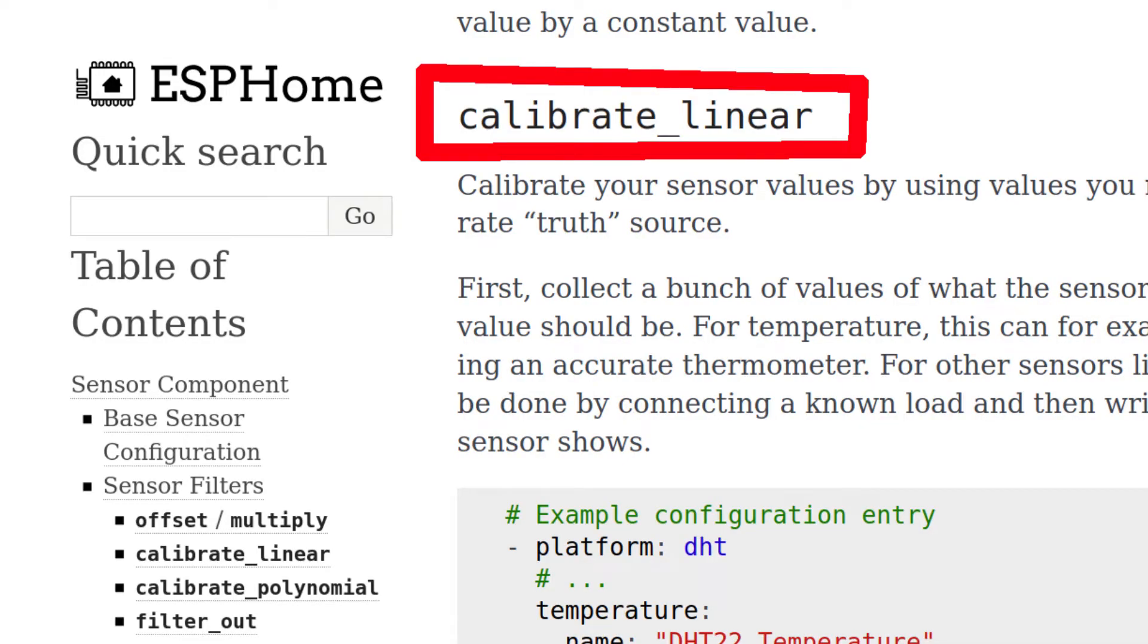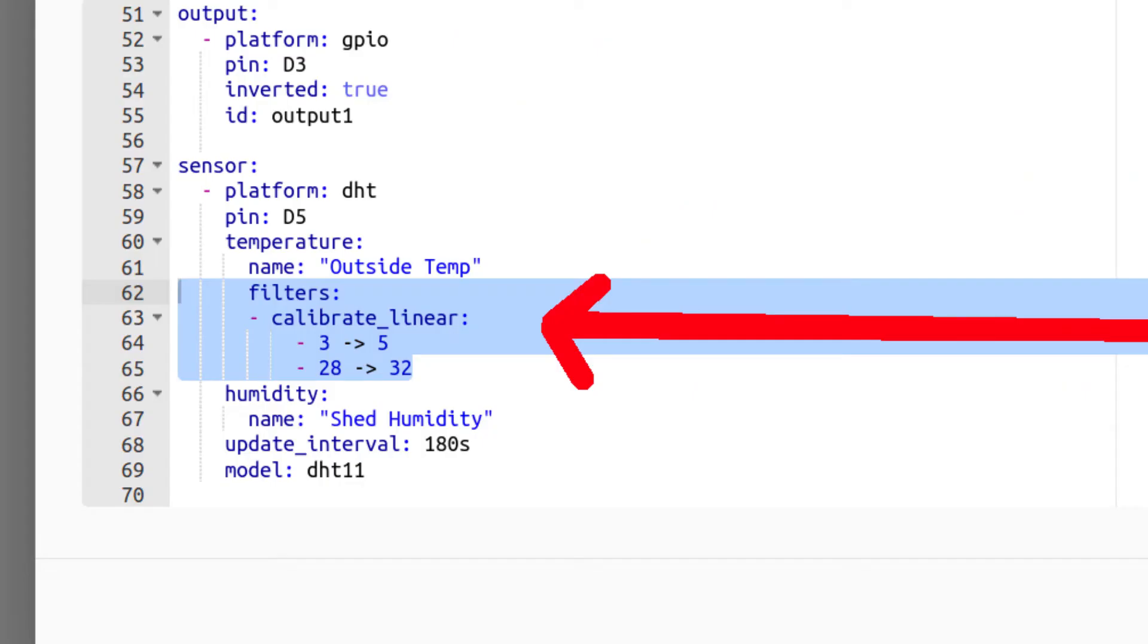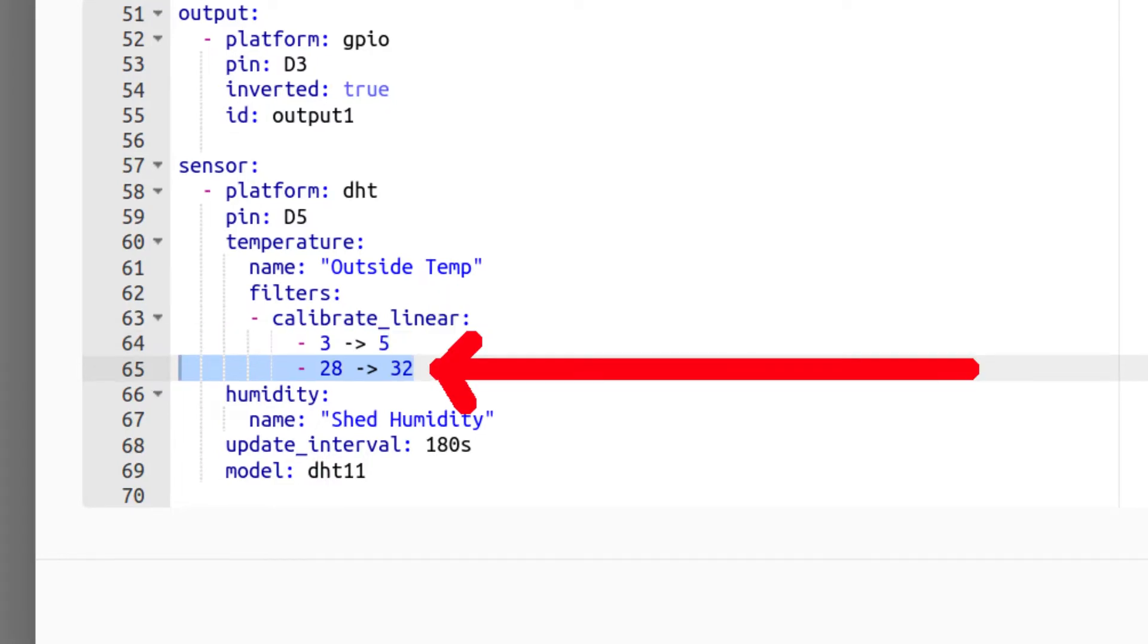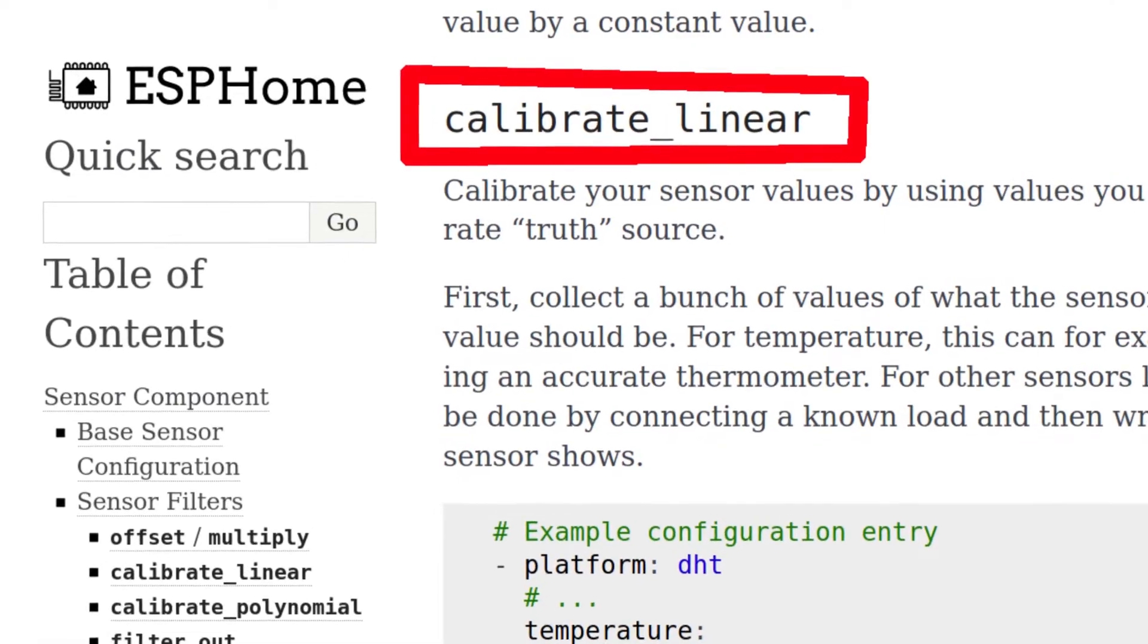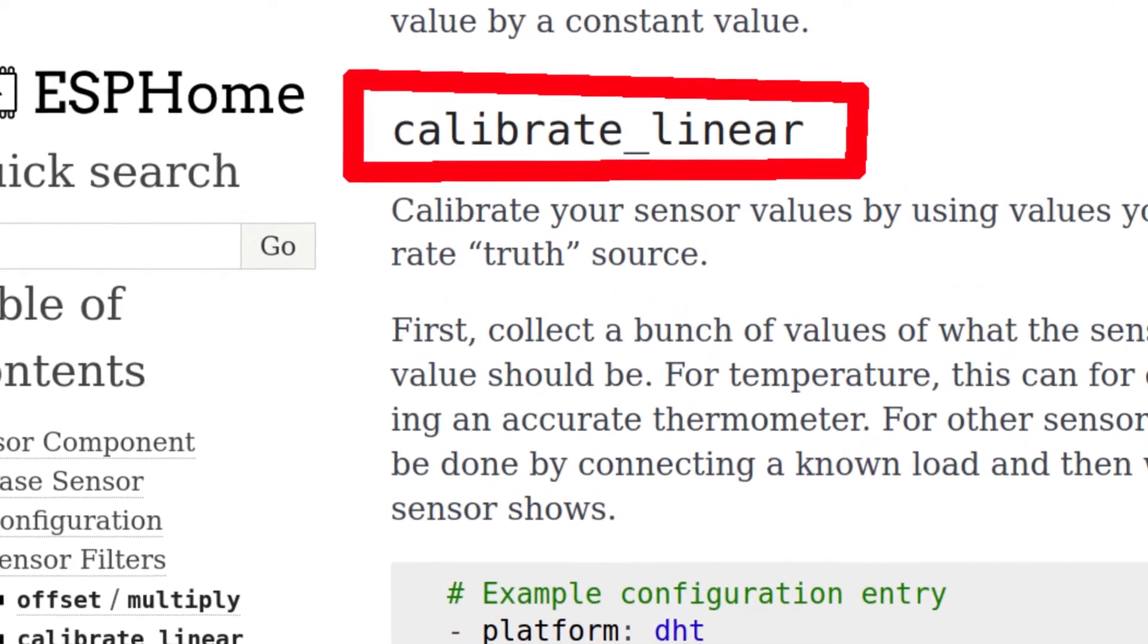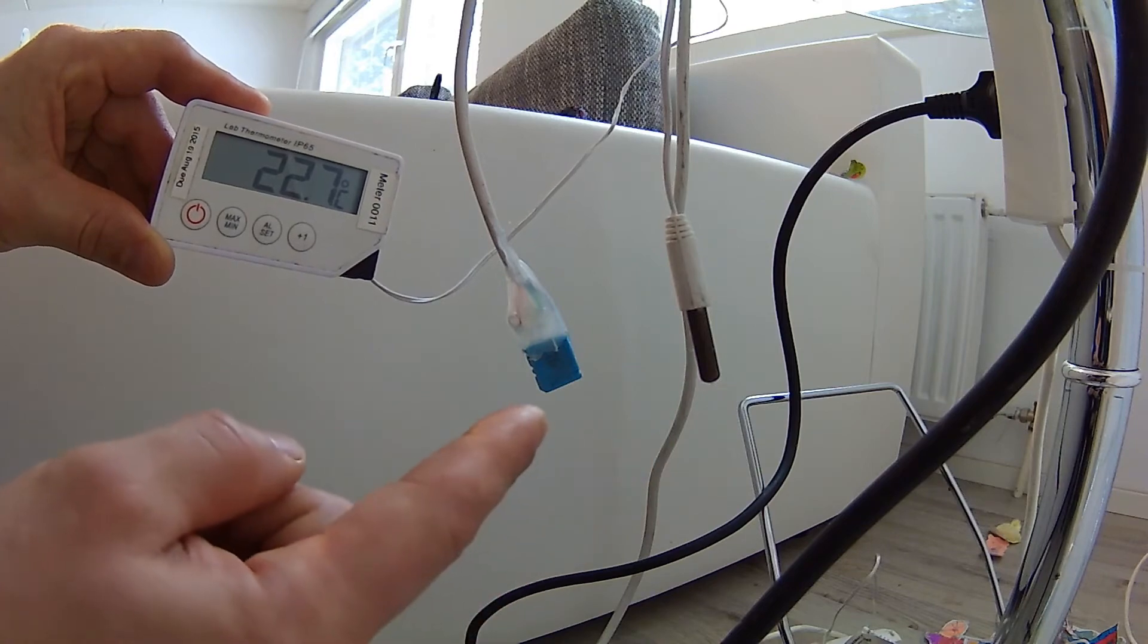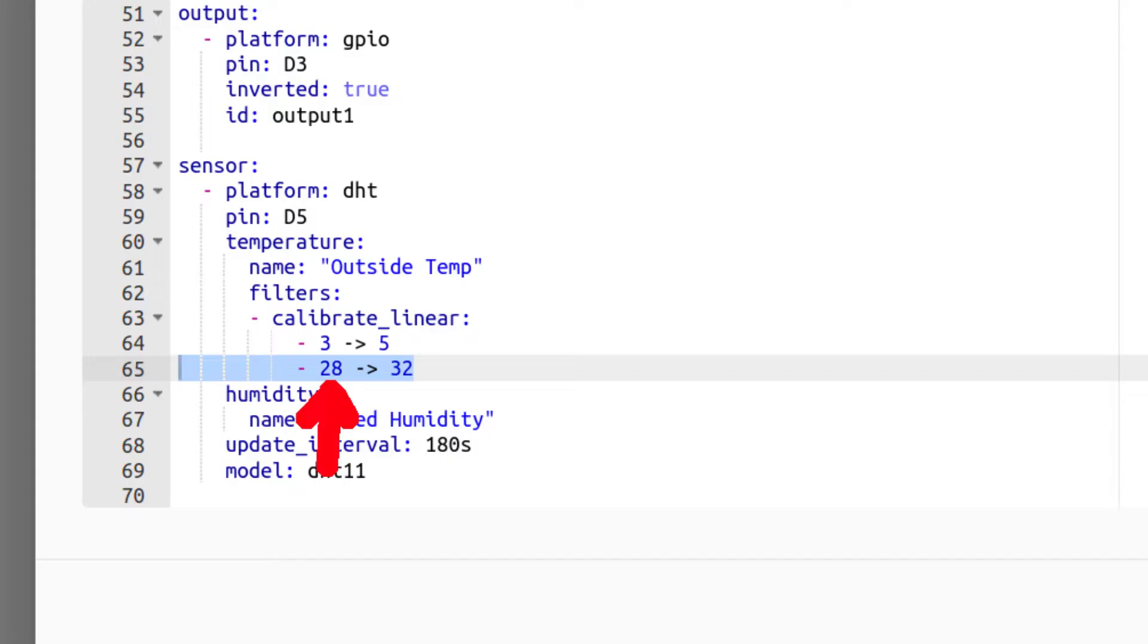So, I will use linear calibration. Just add these lines to your configuration. Essentially, it works like this. At one end of the range you will configure the sensor to show, for example, 5 if the sensor is actually showing 3. And at the other end of the range you will configure the sensor to show, for example, 32 if the sensor is actually showing 28. And the logic will fill in everything else. I have been testing this filter and it works pretty well with a DHT sensor. What you need is to take measurements with some device that you trust, for me is this thermometer here, and write those in your configuration. First comes the value that your sensor is now showing and then comes the value that is actually the real value that you have measured with some reliable device.